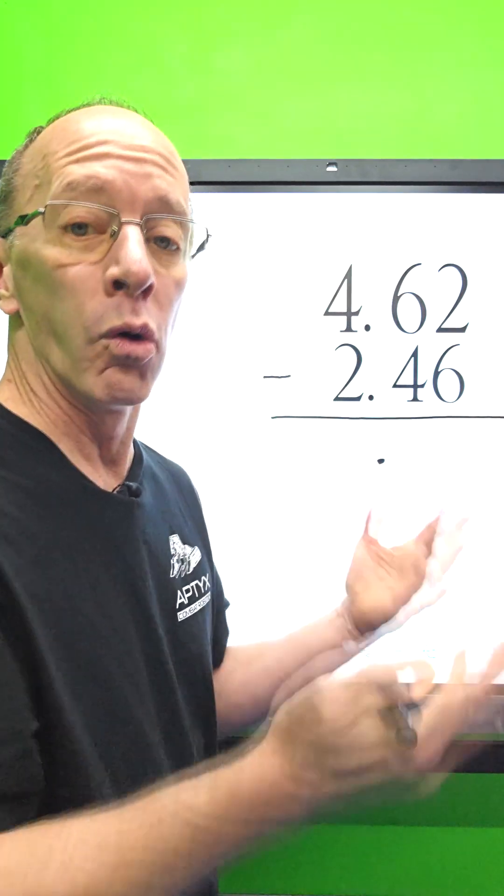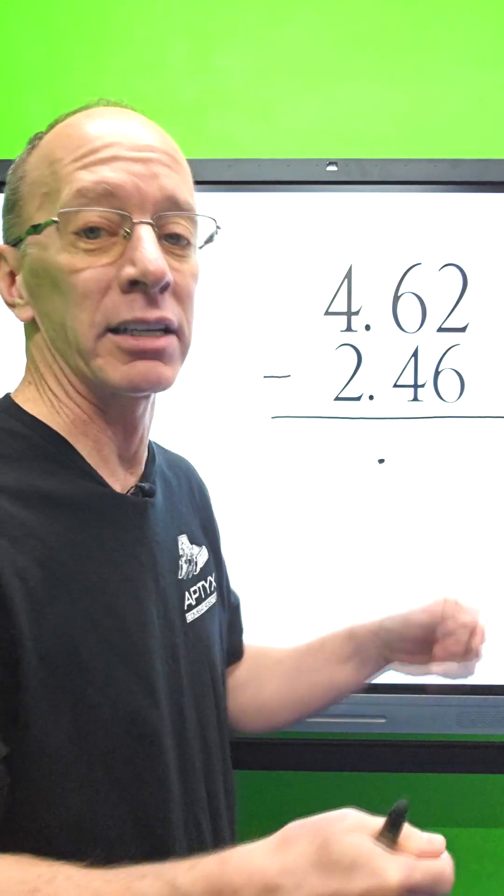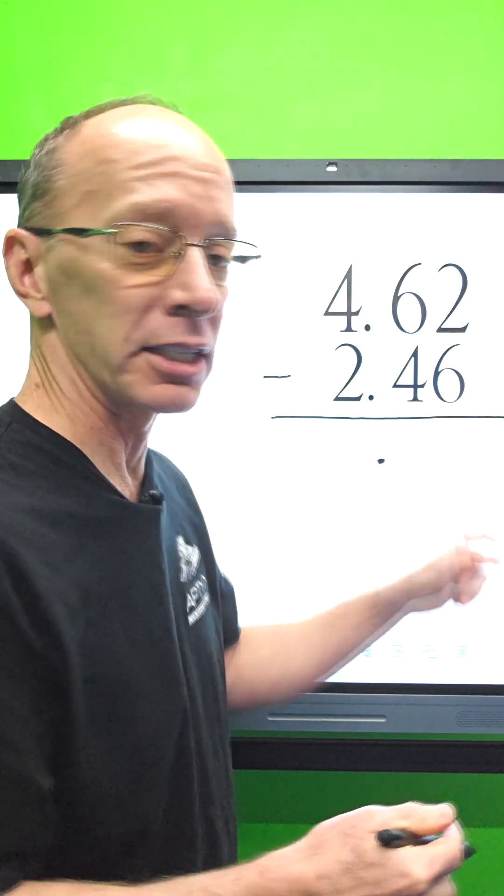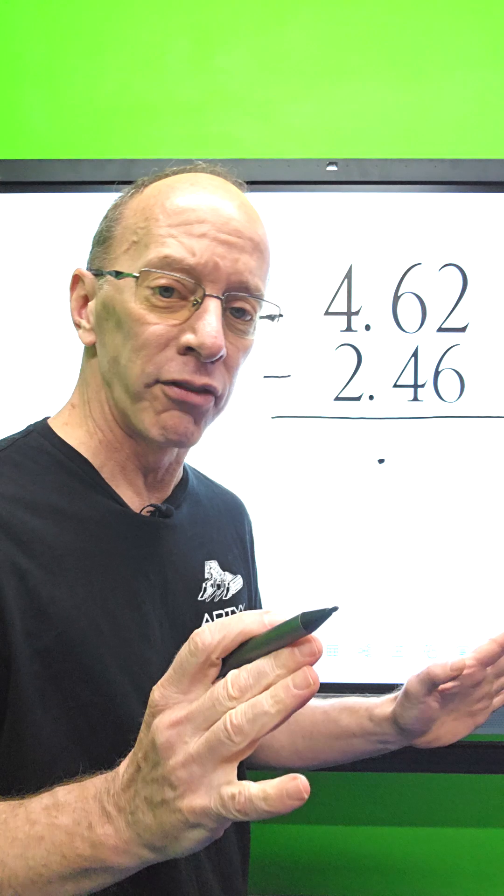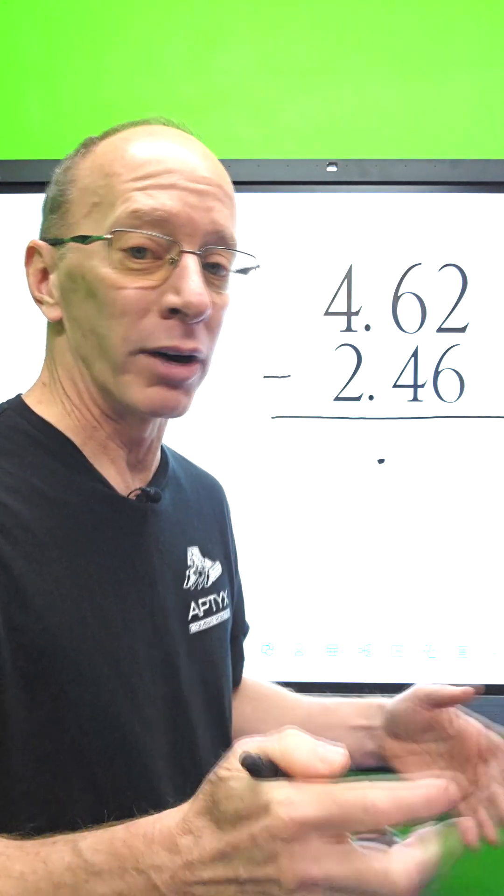So now let's go ahead and subtract like normal. I got two minus six. What is two minus six? No, it's not four. If you got two cookies and you want to take six away, it's not going to be four. I just don't have that many cookies. I need to borrow next door, go next door to borrow some cookies.